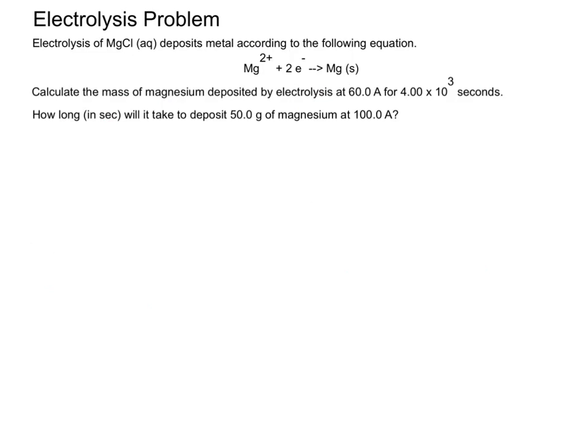But, again, it's going to be the same kind of thing. You start with your 50 grams of magnesium, convert that to moles of magnesium, from moles of magnesium. Don't forget to change that to moles of electrons, to coulombs, to seconds. And that'll be your order that you solve it there. And the answer for that one should have been 3.97 times 10 to the third seconds.